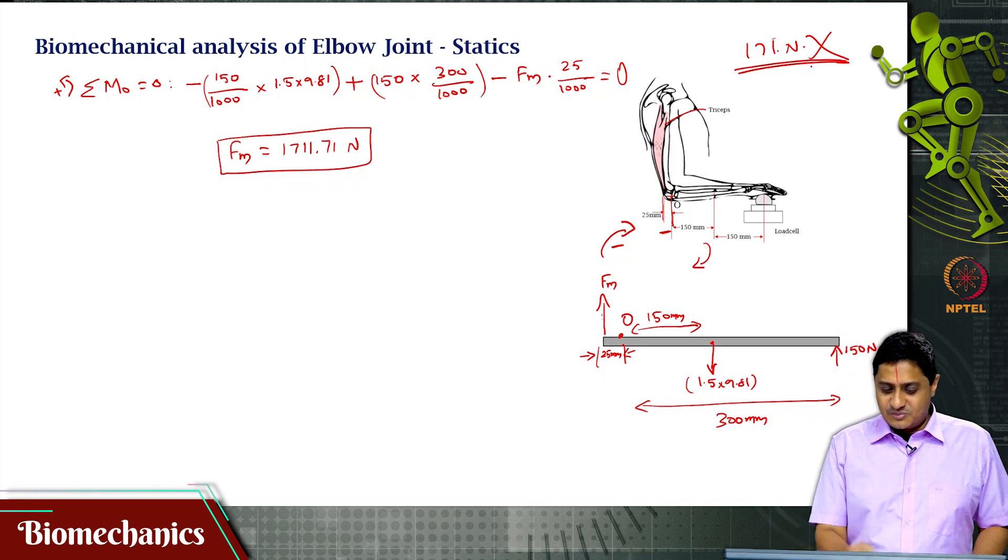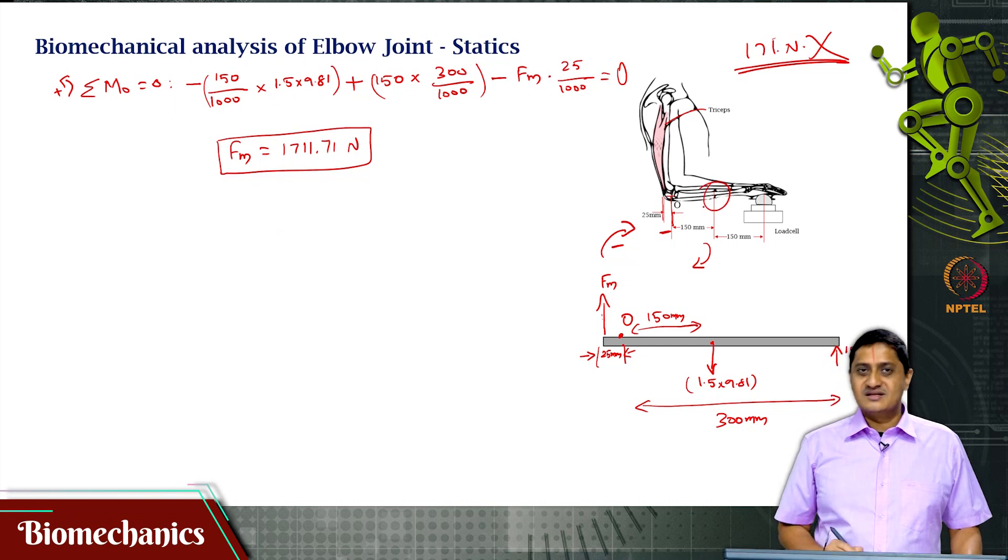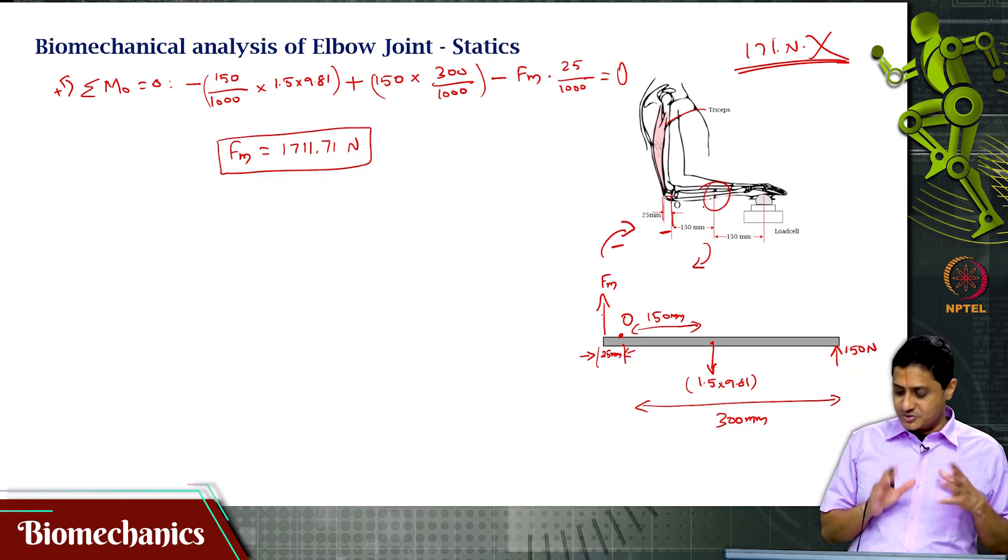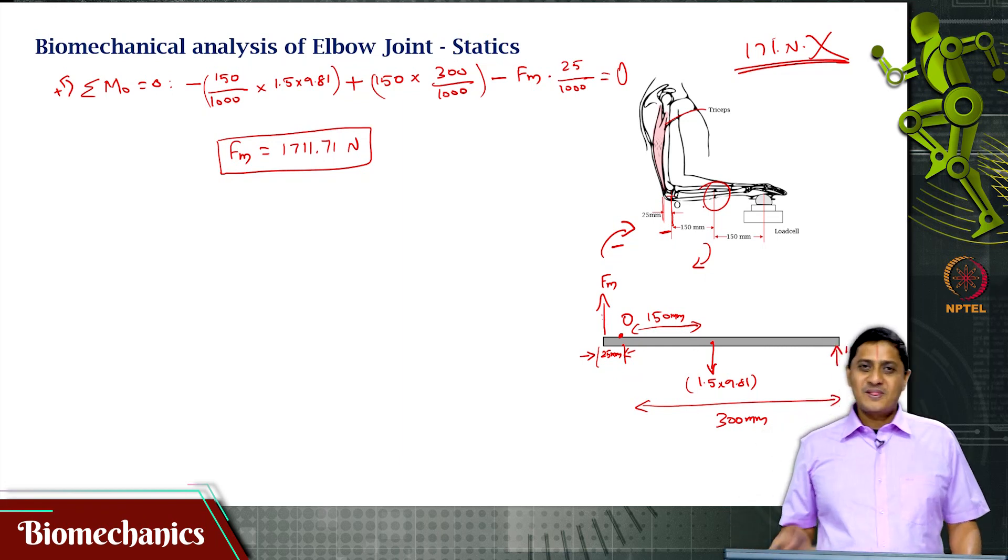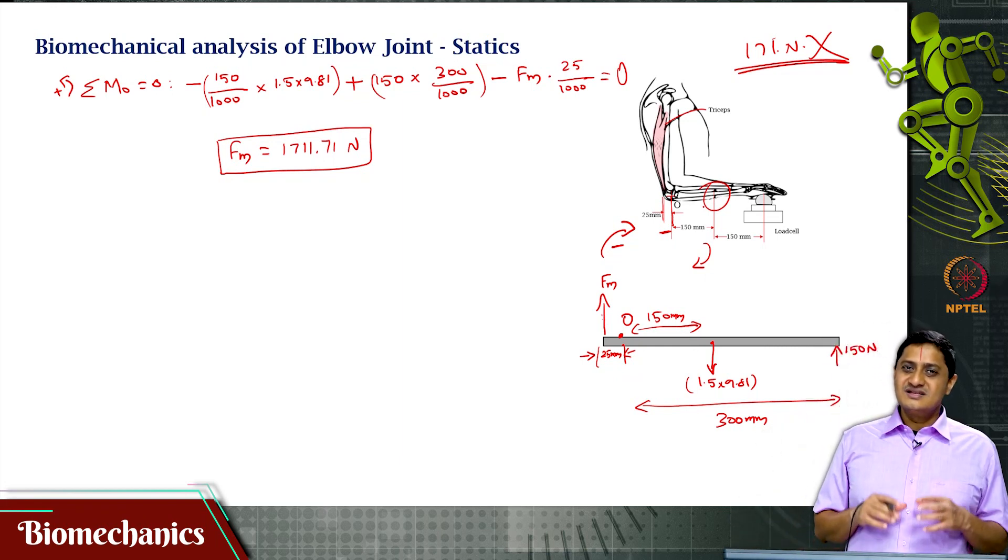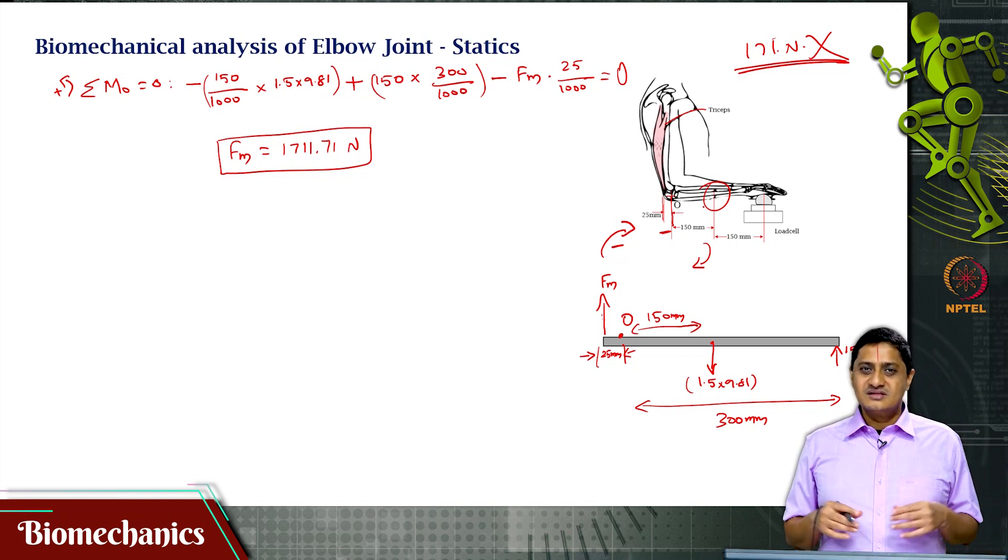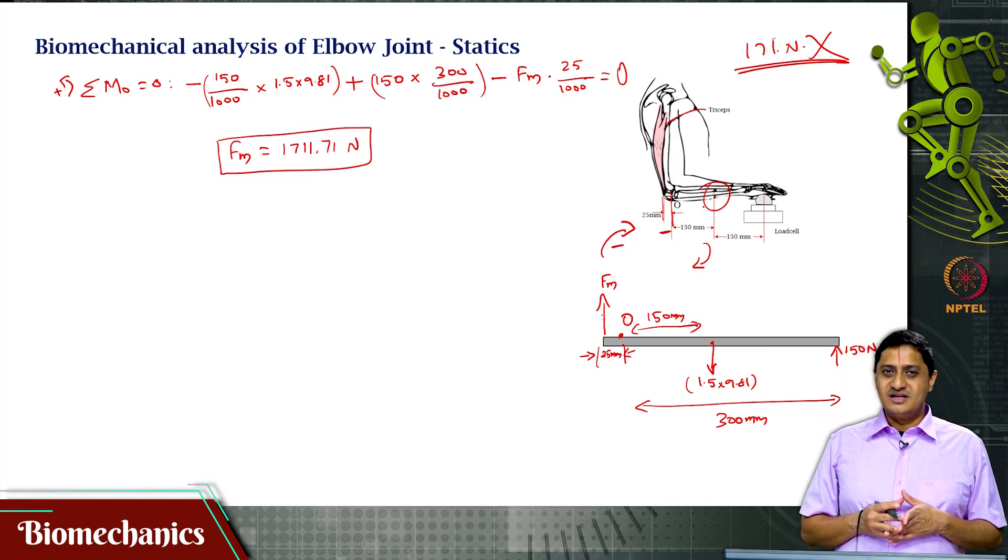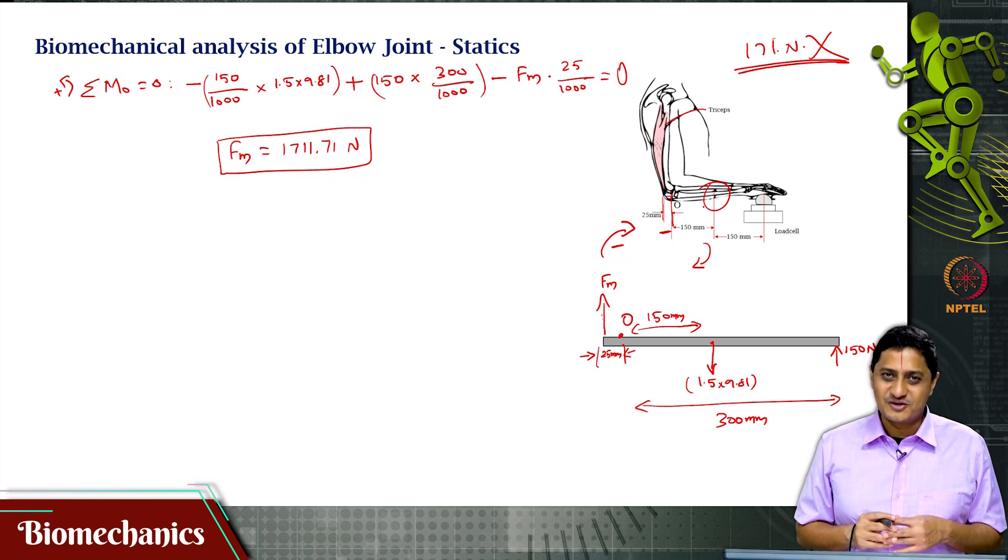Of course, there are other things that come into the picture which is why it is not exactly 12 times because there is also the mass of the arm. In this class, we saw a simple problem involving the elbow joint solving for static equilibrium of the elbow joint. We will see some more simple problems in statics of the elbow joint in the future videos. Thank you very much for your attention.